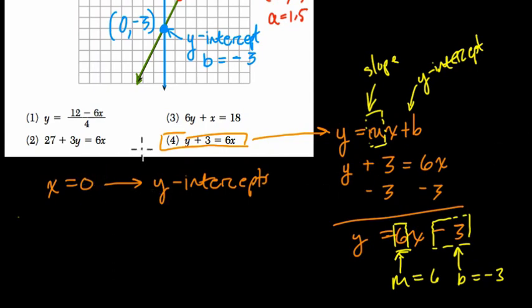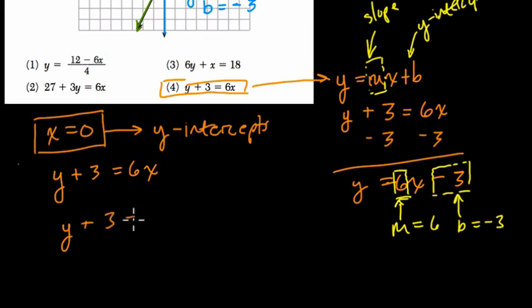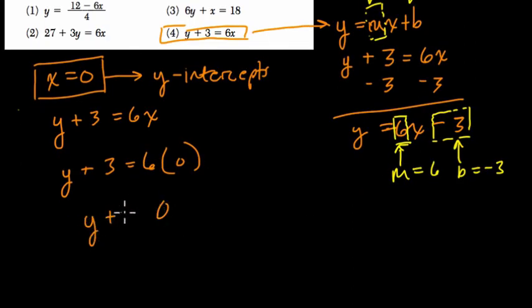So we can find that algebraically by plugging in 0 to each of these functions. I'll leave it to you to try that for all of them. I'll just show it for the choice that's the answer, which is choice 4. So in choice 4, y + 3 = 6x. So suppose we plug in x = 0. Watch how we find the y-intercept. If we do that, y + 3 = 6(0). And 6 times 0, of course, is just 0. And y + 3 = 0. So the question is, what plus 3 is 0? Well, that's -3. And there we can see we found the same y-intercept of -3.